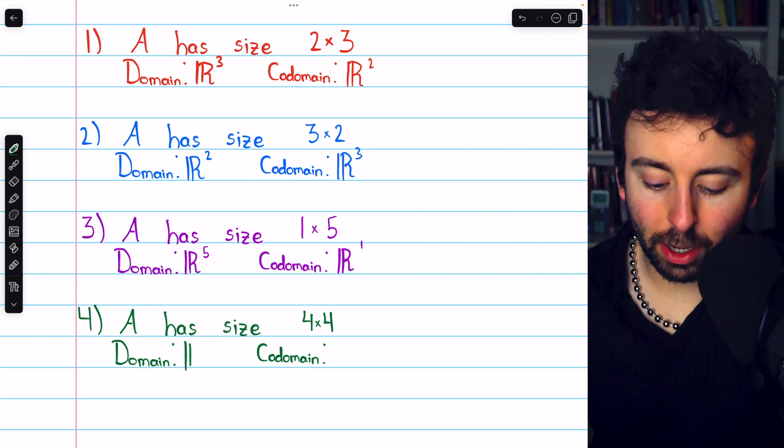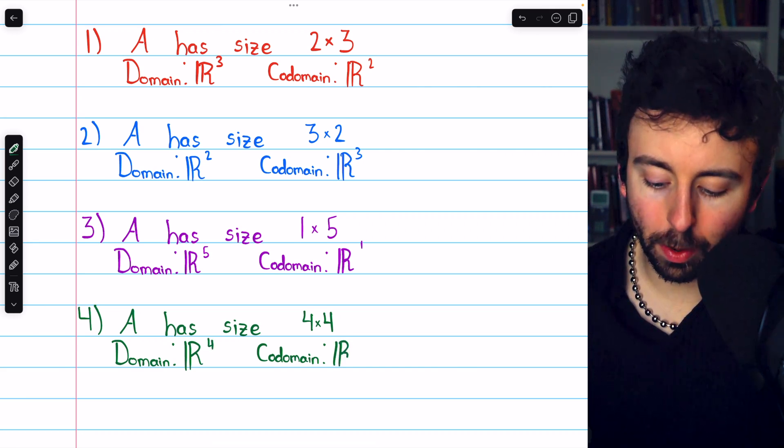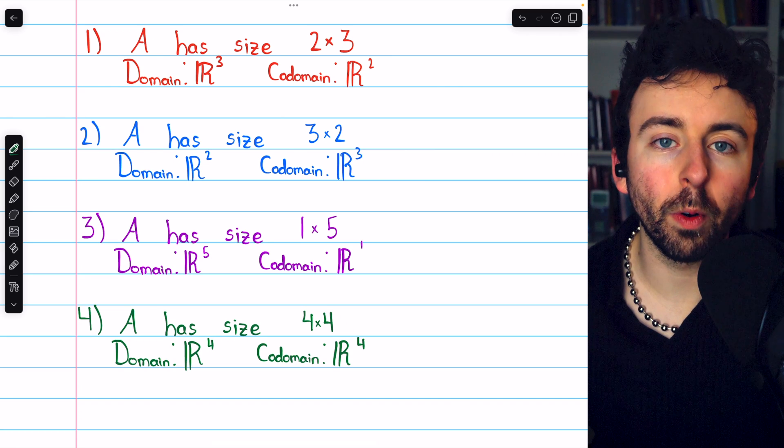Finally, number four, the standard matrix has dimensions 4×4. That's an easy one. The domain is R⁴, and the codomain is R⁴ as well.